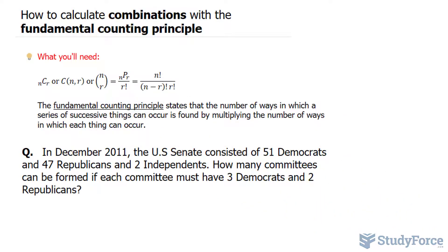In this short tutorial I'll show you an example on how to calculate combinations with the fundamental counting principle. What you'll need to be successful here is knowledge of the formula for combinations. In addition you'll need to understand what the fundamental counting principle is, and that states that the number of ways in which a series of successive things can occur is found by multiplying the number of ways in which each thing can occur.